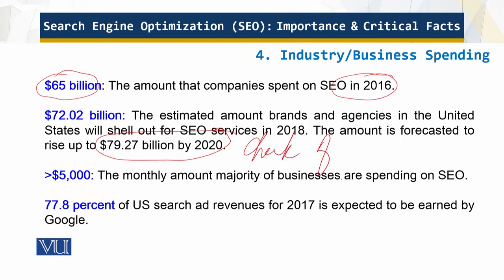You can imagine: if you get on the first page of search results, you get 91.5% of the share — a very big chunk of the pie. This is the amount spent monthly on search engine optimization, and out of this large pool of money, 77.8% is going to Google. That is a tremendous amount of SEO money, so you have to ensure your company and your pages come up on that first Google page.